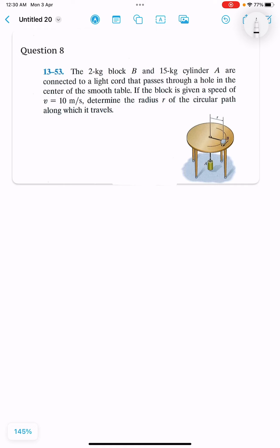First, we have the given values: mA is 15 kilograms, mB is 2 kilograms, and vB is 10 meters per second.